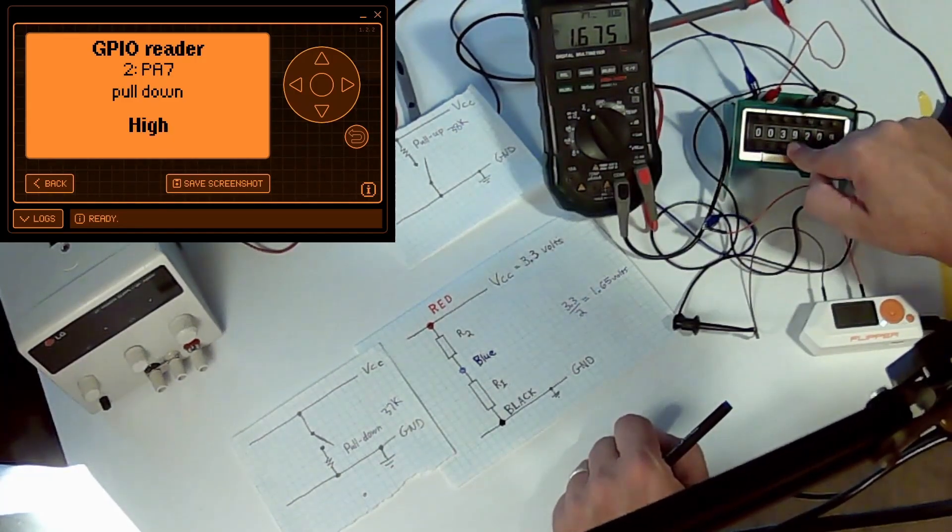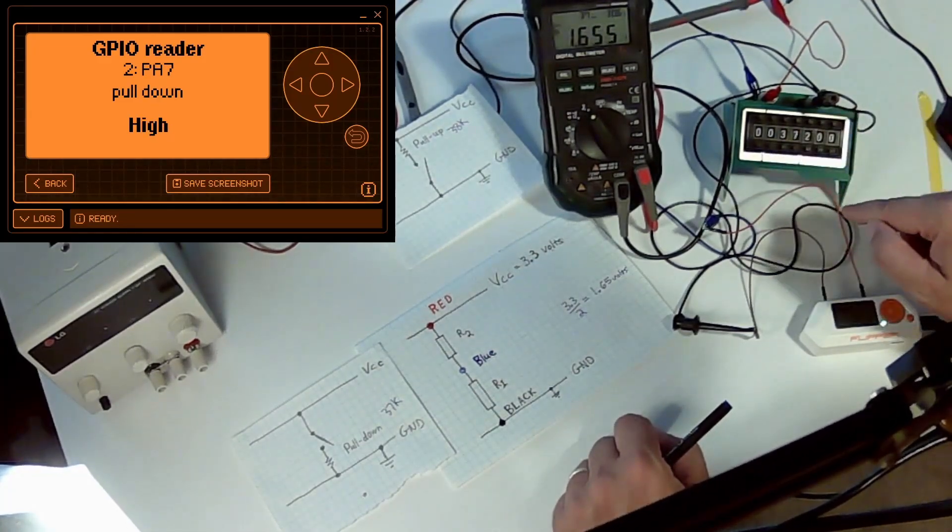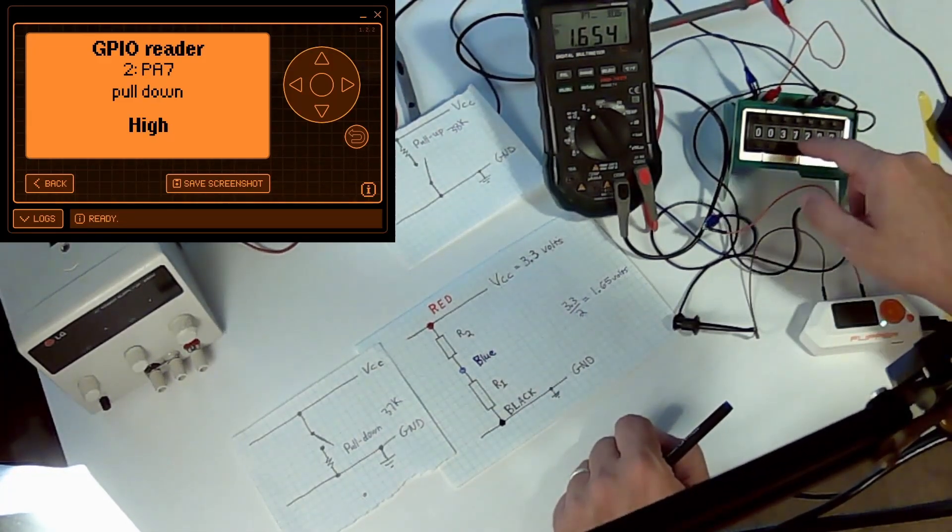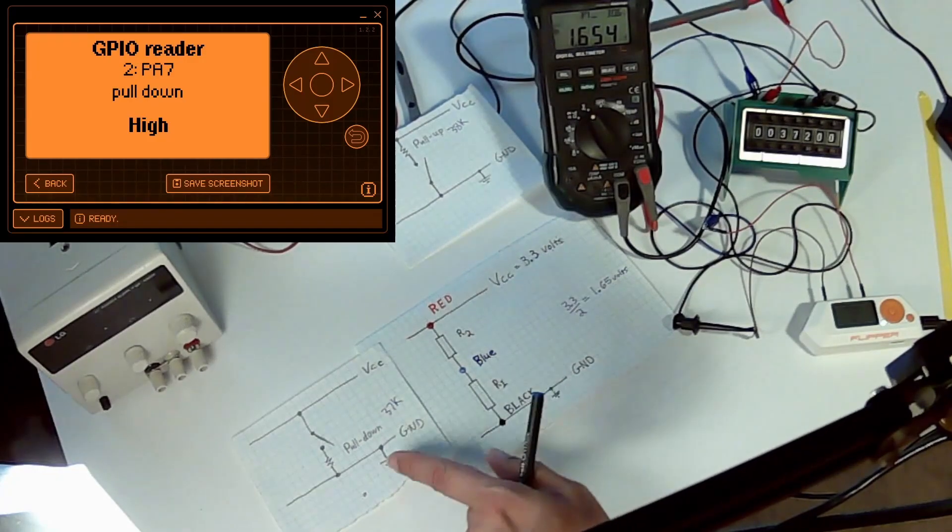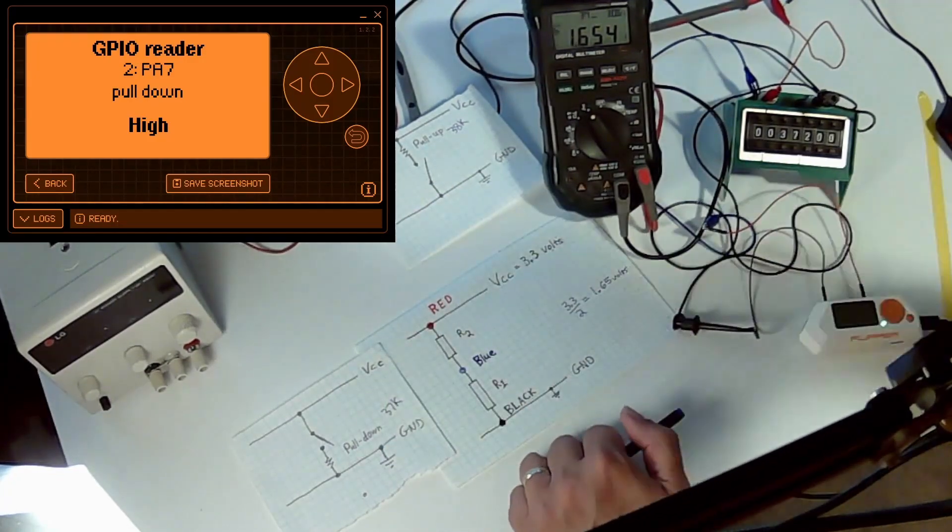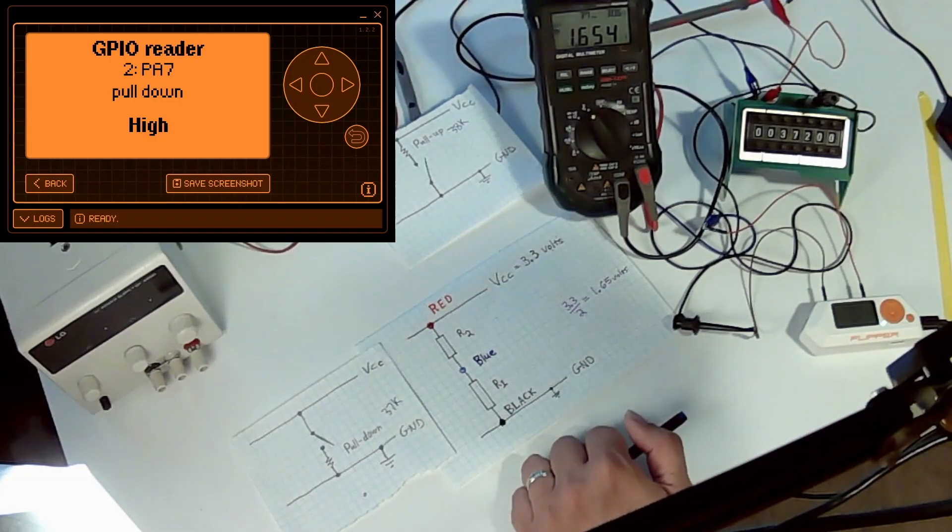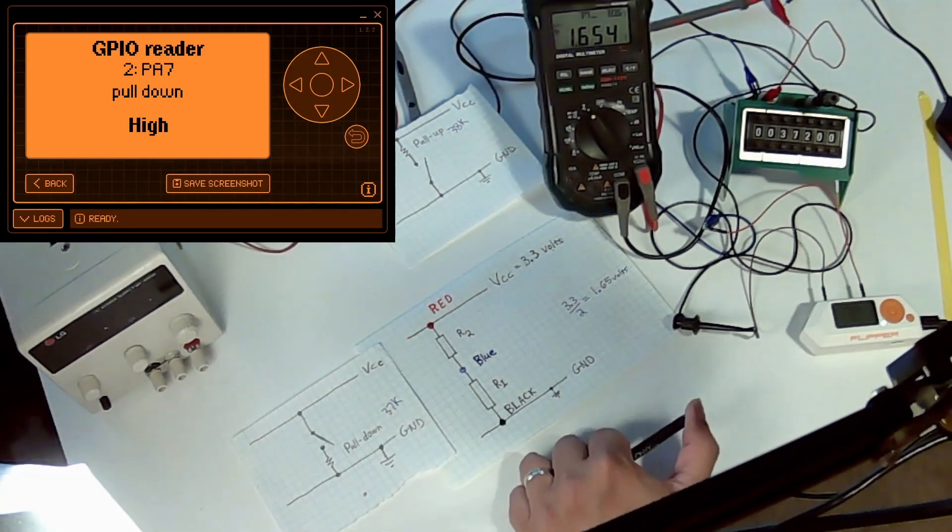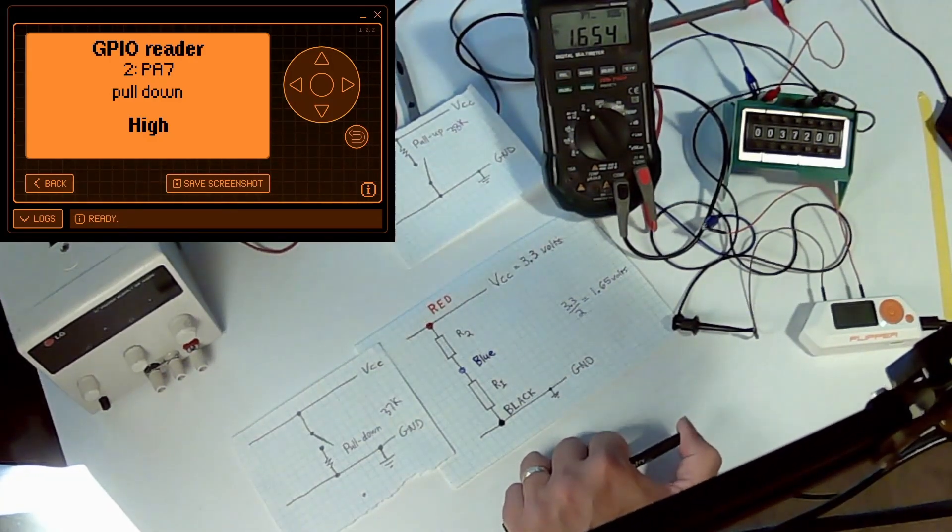I guess we could go down to 37k and it would be correct, but basically those resistors are probably like a 39k plus or minus 10% is what we're actually seeing.